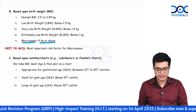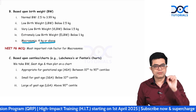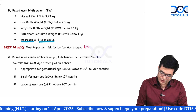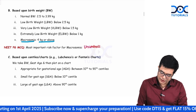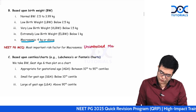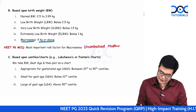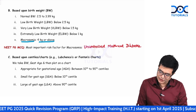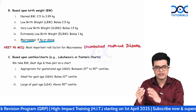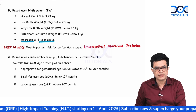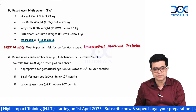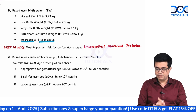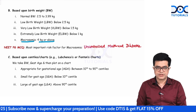NEET PGMCQ 2019: the most important risk factor for macrosomia is uncontrolled maternal diabetes. Whenever the mother has uncontrolled diabetes, that causes hyperglycemia, which stimulates more insulin release in the fetus. Insulin causes fat deposition, leading to a big, macrosomic baby.